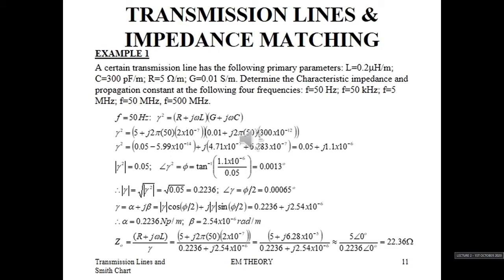Writing gamma as alpha + jβ, alpha is simply the magnitude of gamma times cosine of phi over 2, while beta is the magnitude of gamma times sine of phi over 2. Therefore, alpha is 0.2236 nepers per meter, while beta is 2.54 × 10⁻⁶ radians per meter.